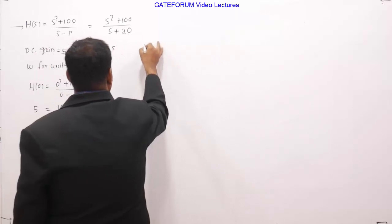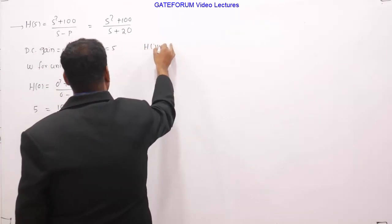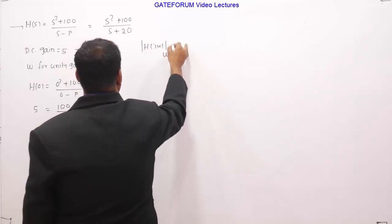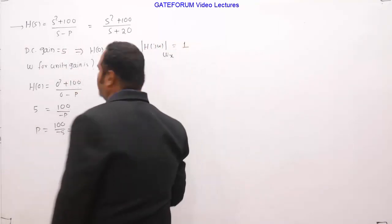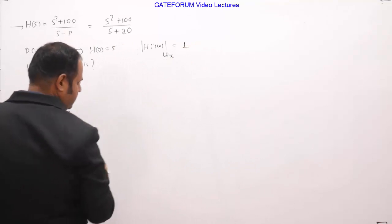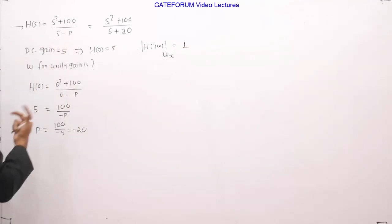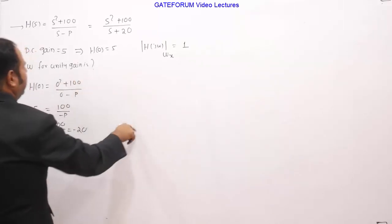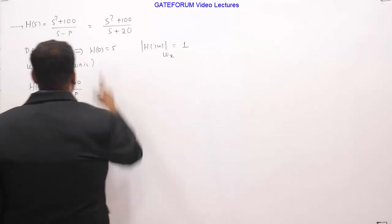It means that h of j omega at let's say it is omega x, this is supposed to be 1, then what is the frequency omega x? The magnitude of this is the unity gain, so unity gain means magnitude of transfer function should be unity or 1. So let us say the frequency at which this is happening is omega x.